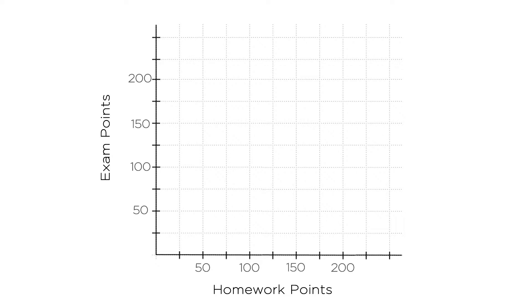In this simple case, you can earn full points on the homework and get a zero on the exams, or you can earn full points on the exams and get a zero on the homework, or you can get some linear combination of the two, like 100 points on the homework and 100 points on the exam.